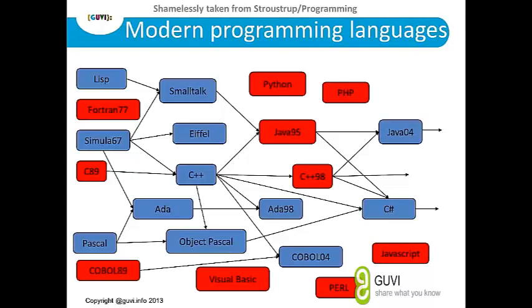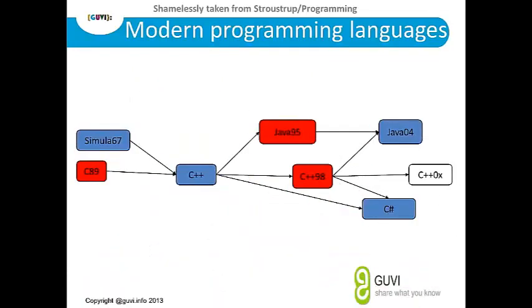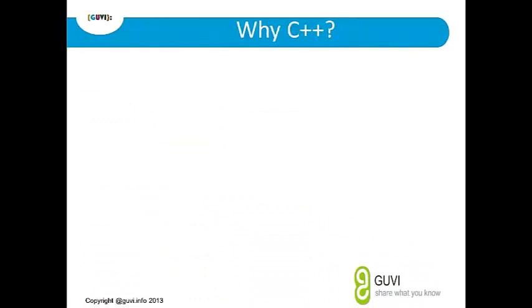C++11 has also evolved. So this is the overall history: C++98, C++, Java, C#, and then C++11.